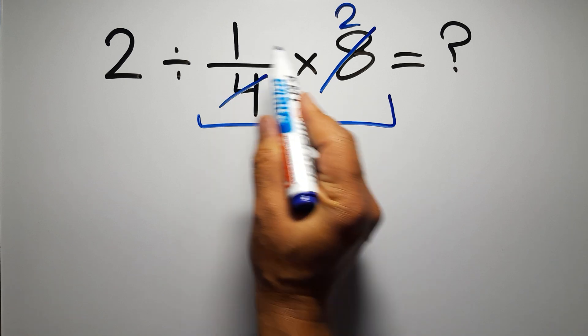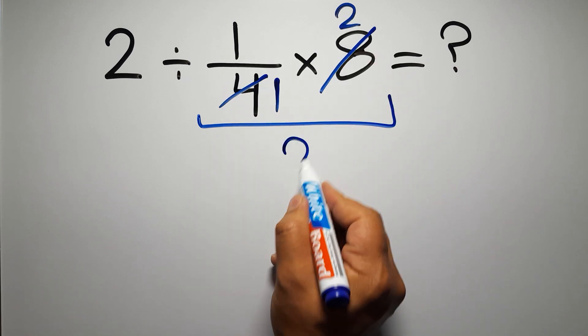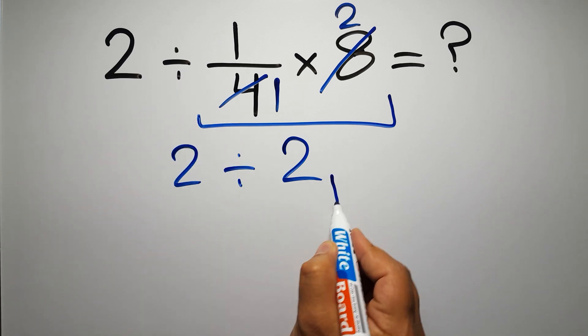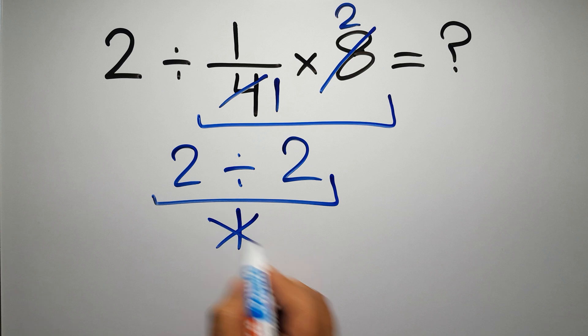So here we have just 1 times 2, which equals 2. So 2 divided by 2 gives us 1. But this answer is not correct.